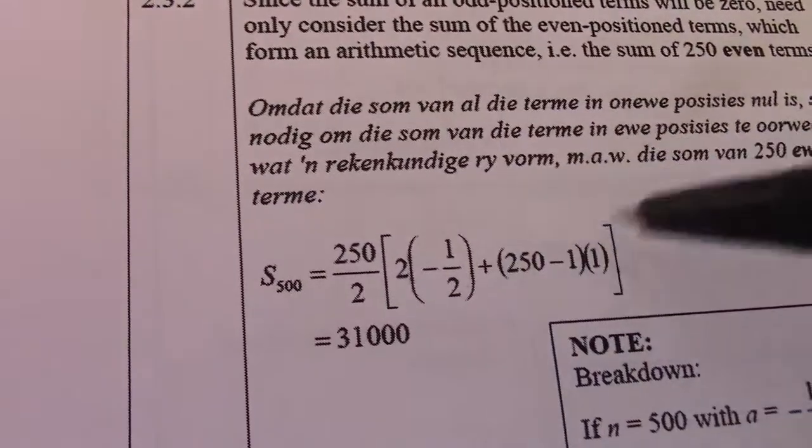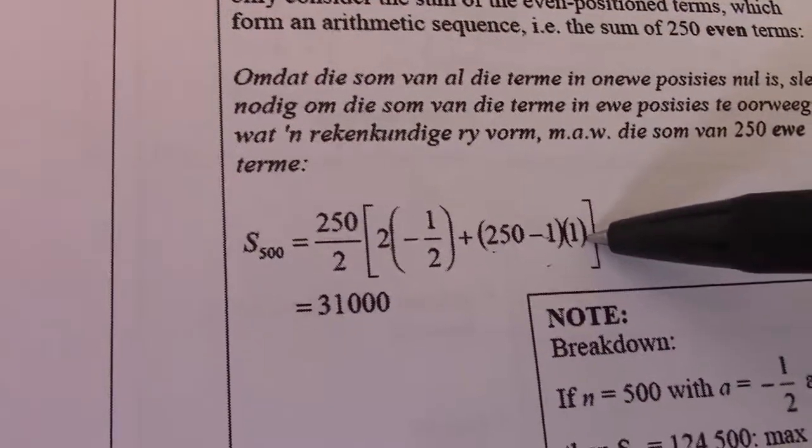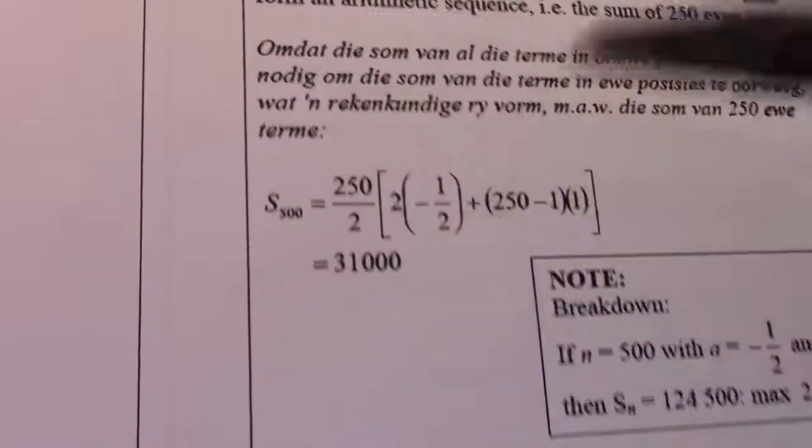So the other 250, there is minus half, 250 minus 1 is 249, my common difference is 1, so I get 31,000.